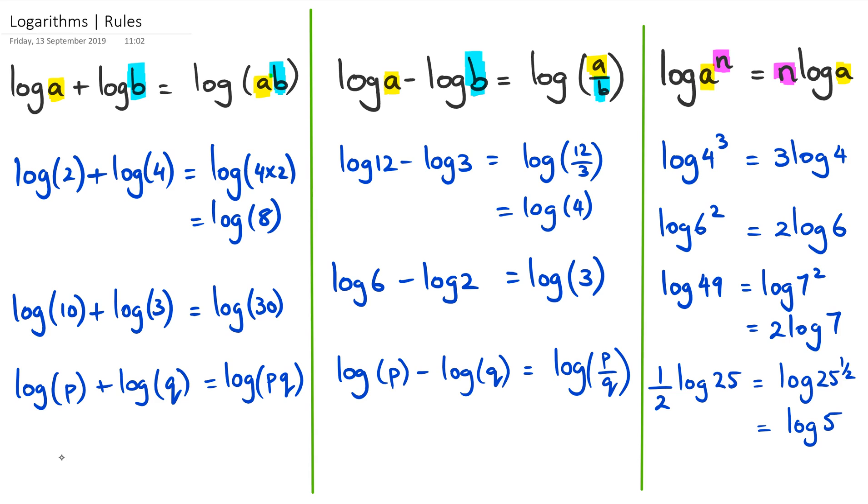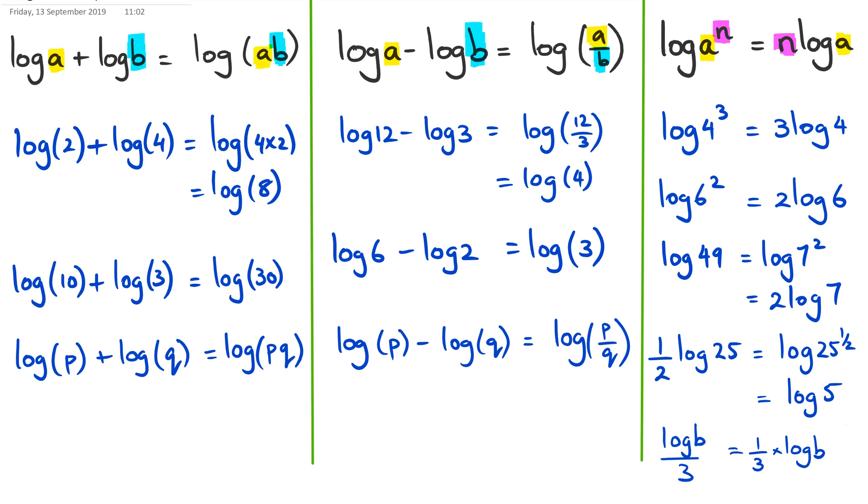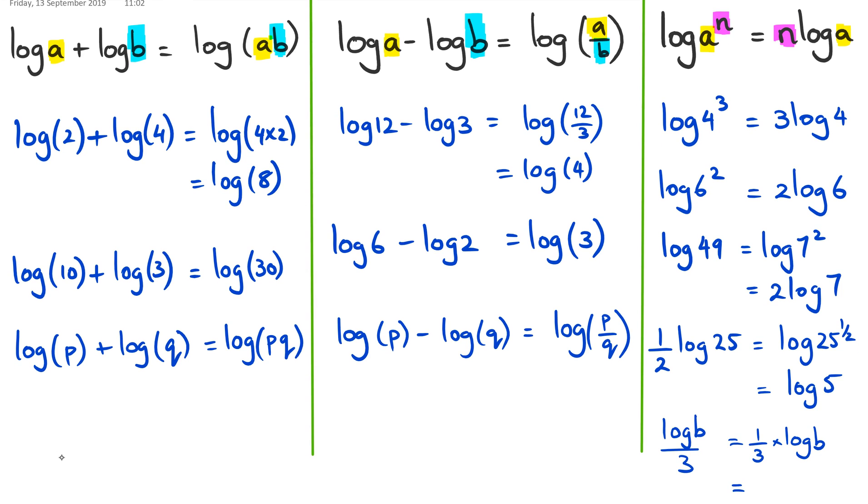And of course, the last one. If you have log of B over 3, then this is the same thing as saying one-third. So I'm going to rewrite this as one-third multiplied by log of B, which means we can rewrite this as log of B to the power of one-third.